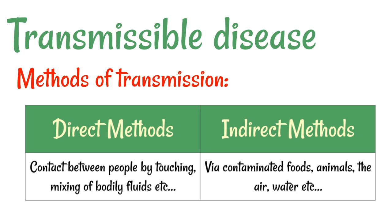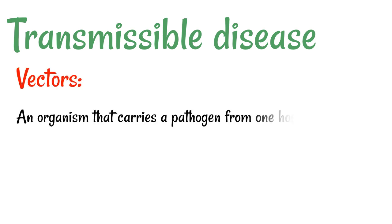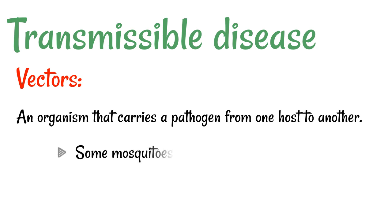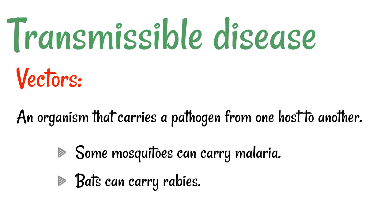We also have something called vectors. A vector is an animal that carries a pathogen from one host to another. A good example is mosquitoes — certain types of mosquitoes can spread malaria. Bats can spread rabies, as well as other animals.